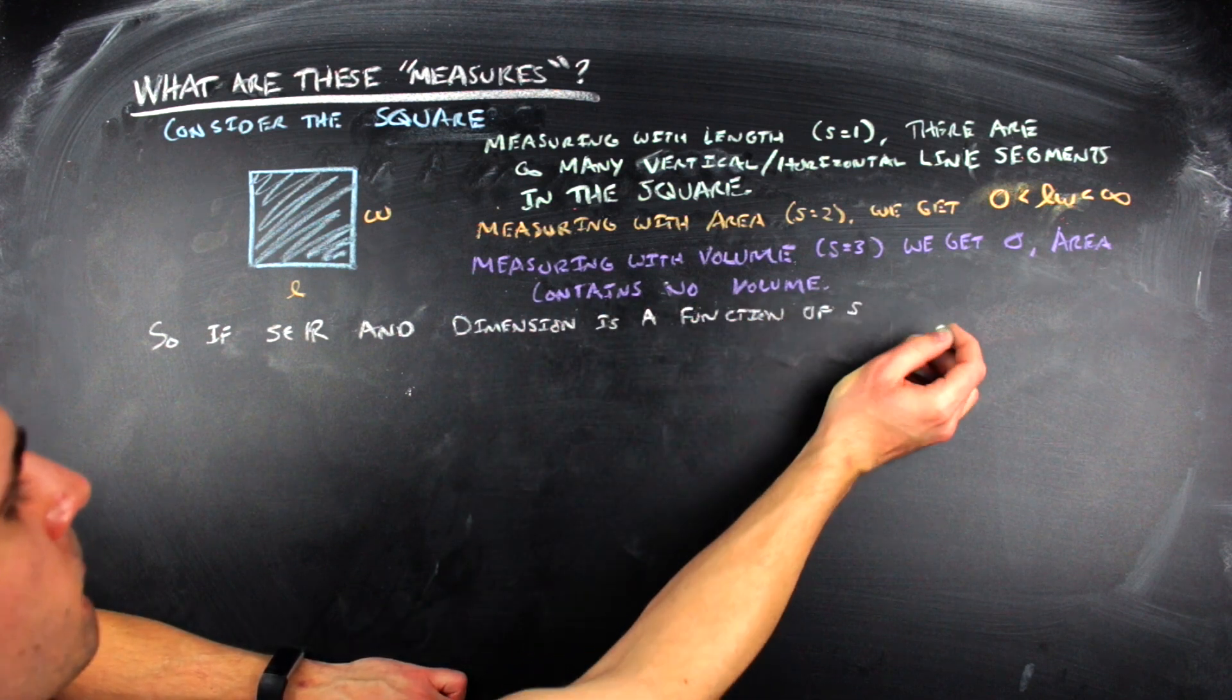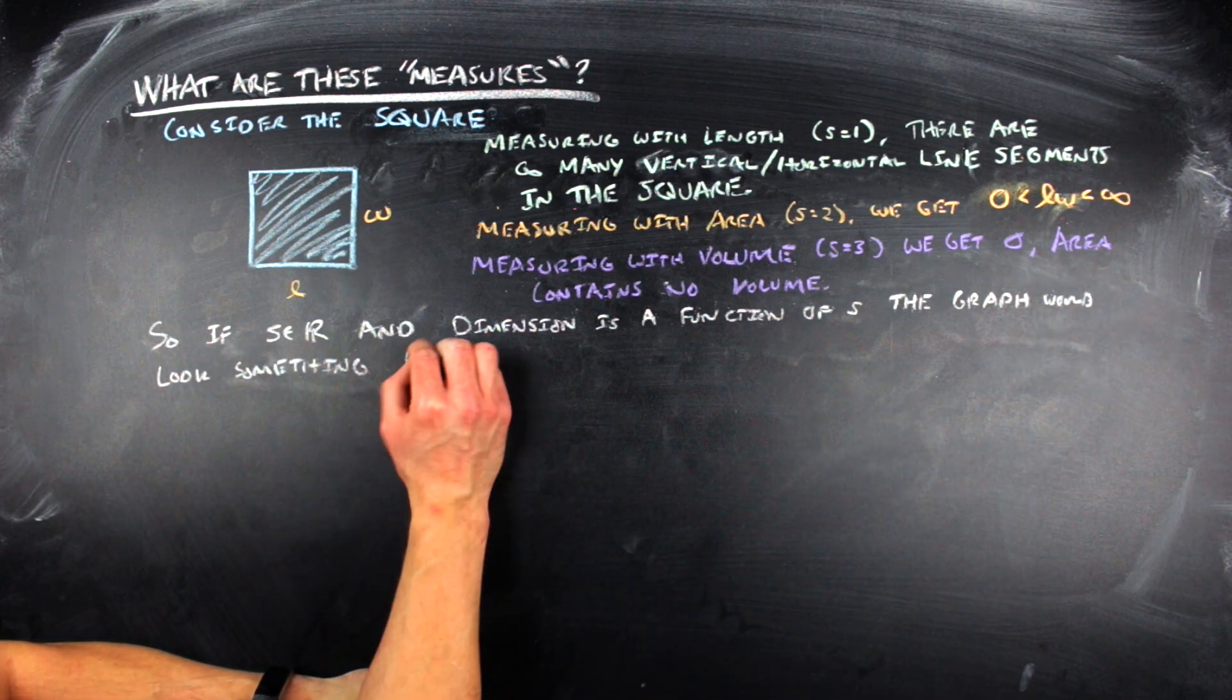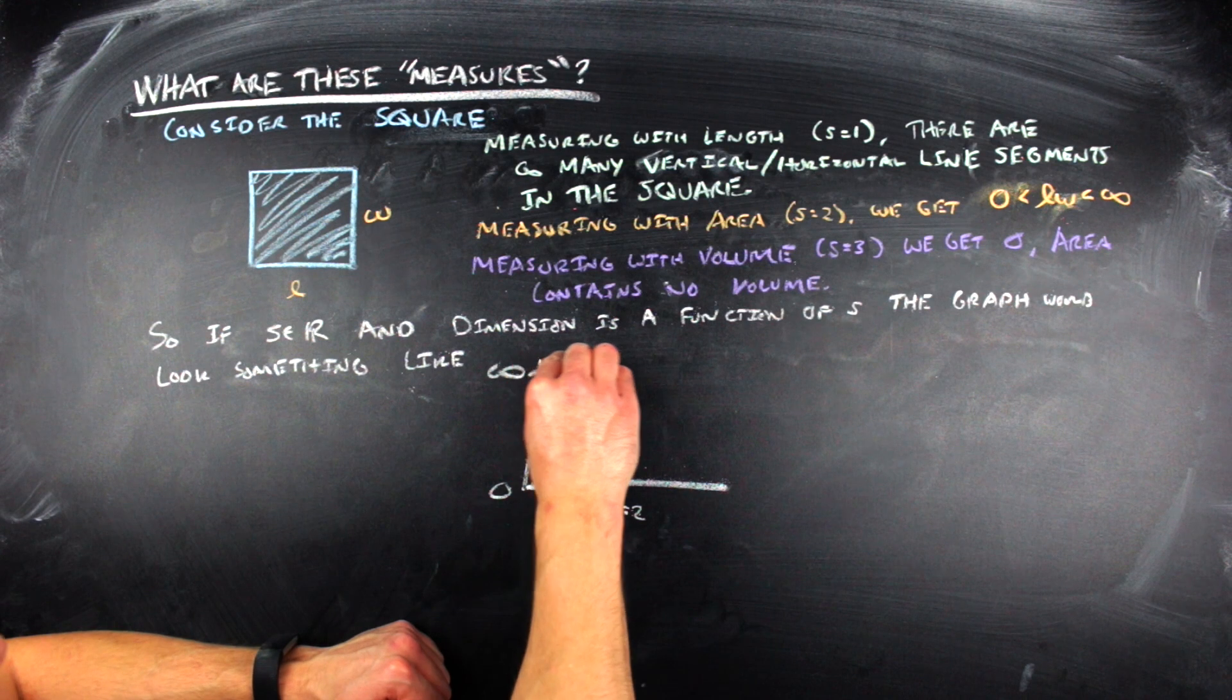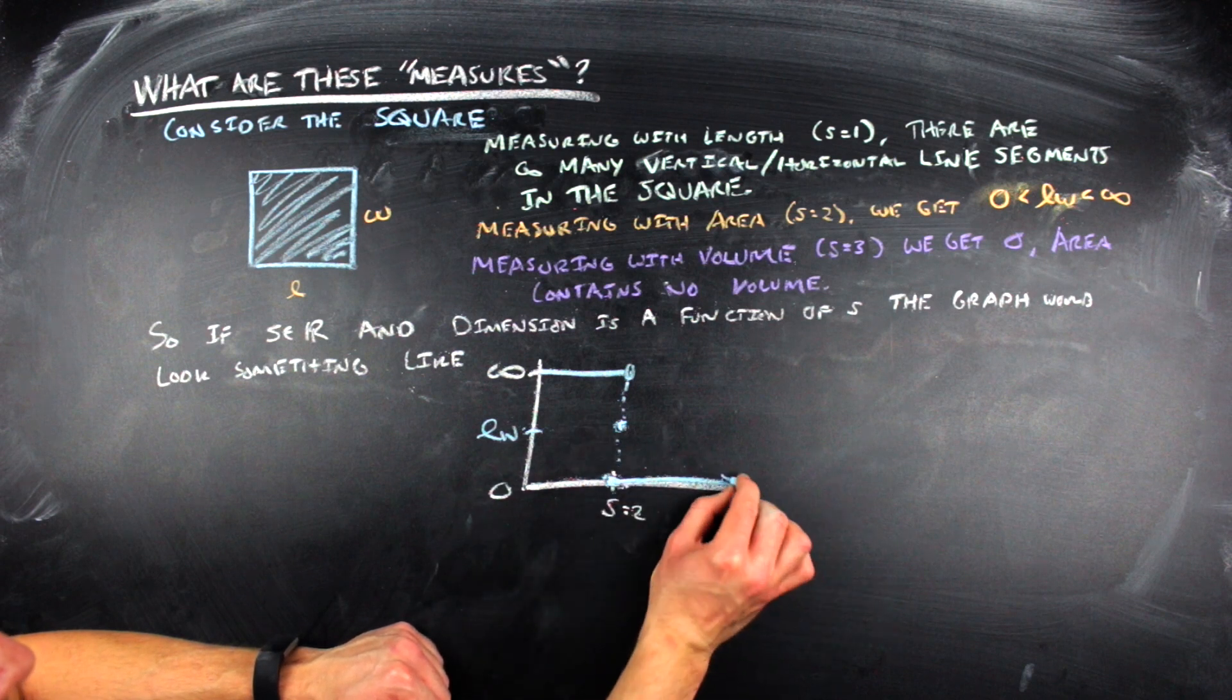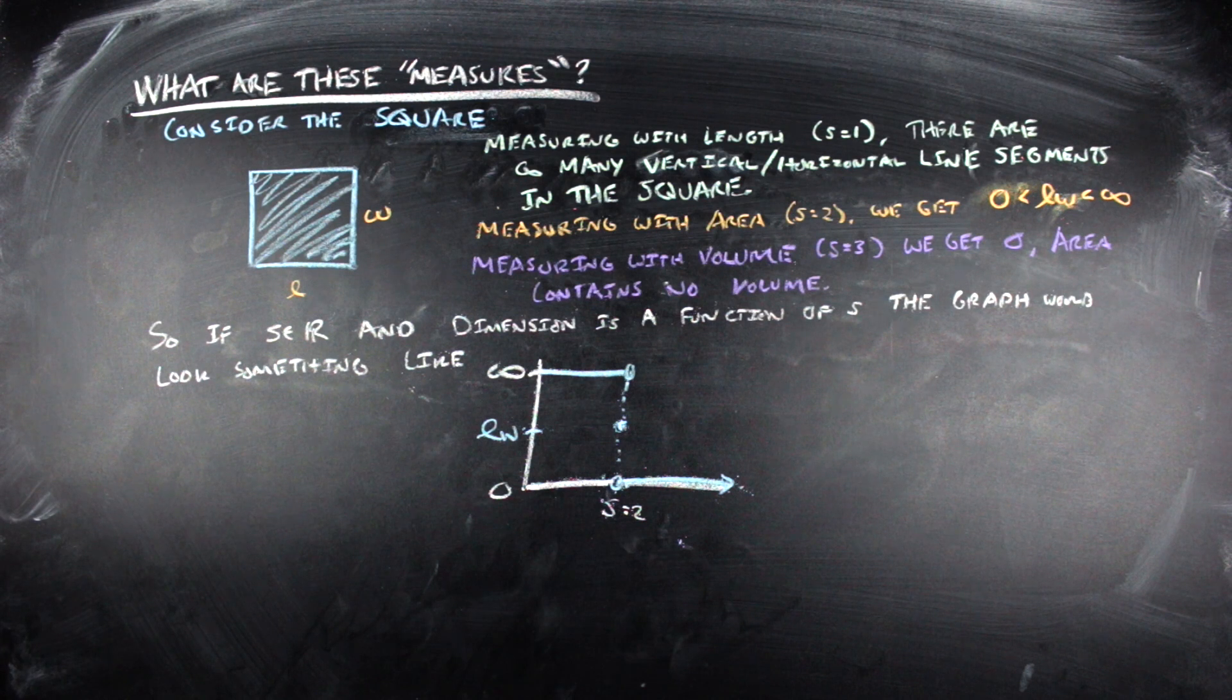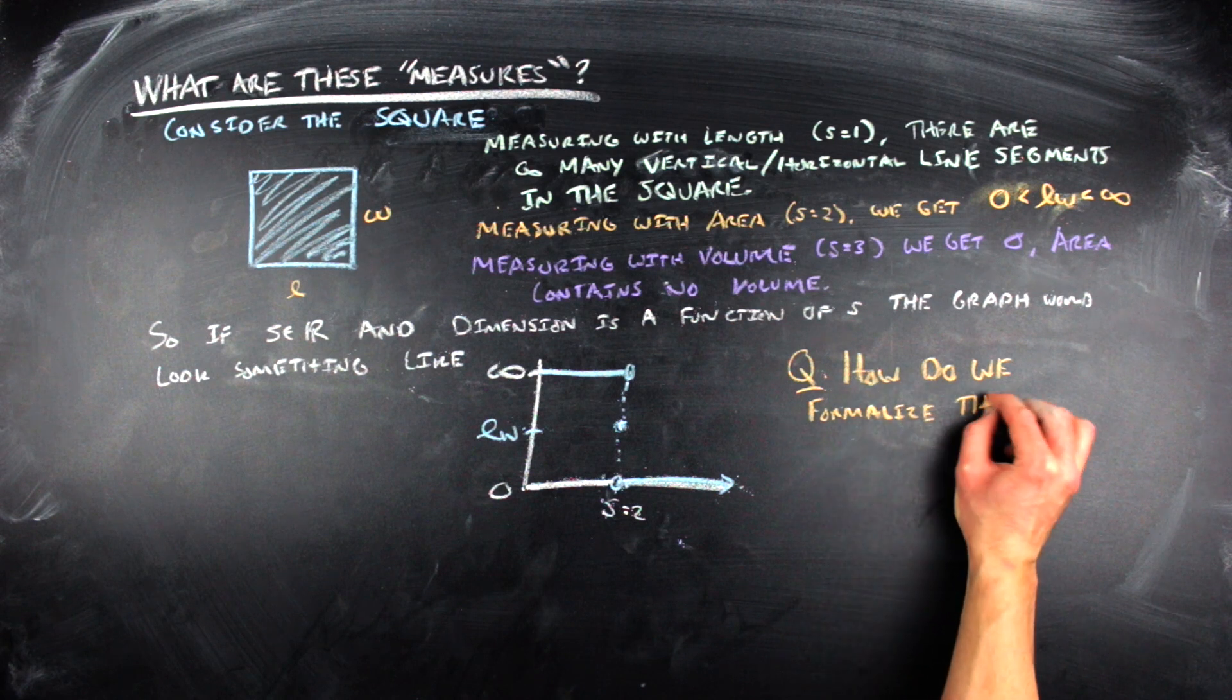So if we do approach it in this naive way of saying that dimension should be a continuous parameter, and we look at these types of measures associated with each dimension, if we are before two, we should have infinite measure. And if we are after two, we should have zero measure. There should be this jump from infinity to its actual value for two, which is that you actually get the length times the width at two, which is some finite value, and then that will jump all the way to zero. So we say that something is of a certain dimension when this jump occurs.